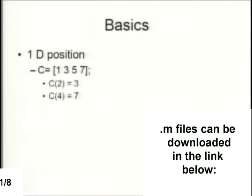So if you wanted to go from 1 to 100, you wouldn't have to type out 50 numbers. Talking about the position inside the array is a big deal in MATLAB — you need to know which numbers you're talking about. So if you wanted to talk about the second number in C, you would type C parentheses 2. That would be equal to 3 in this array, and the fourth number would be equal to 7.